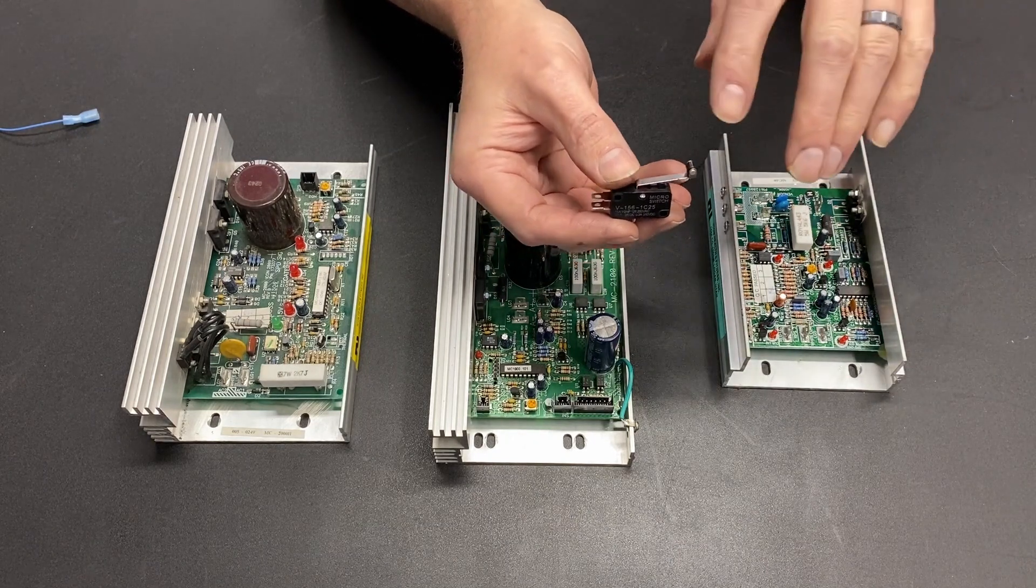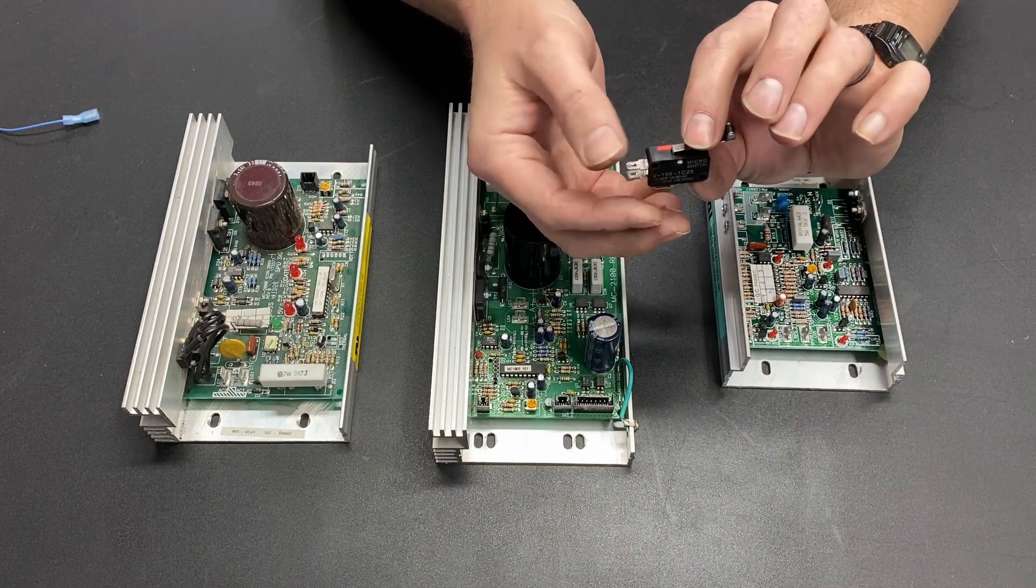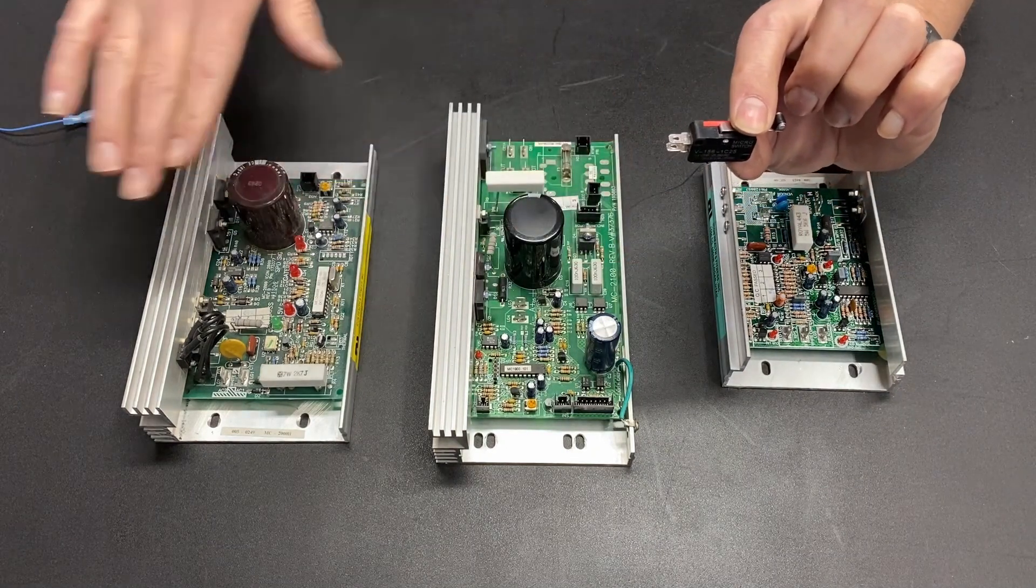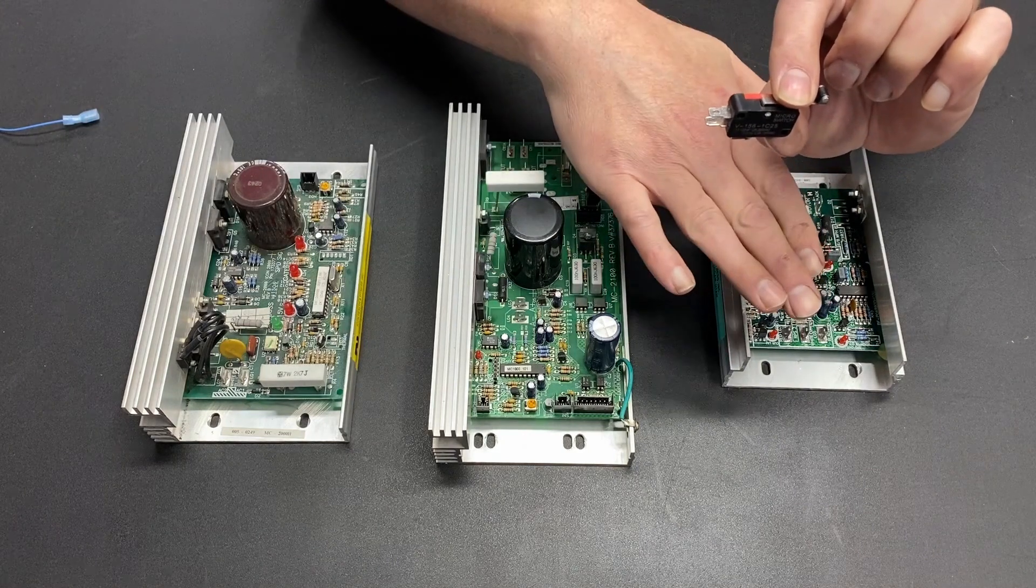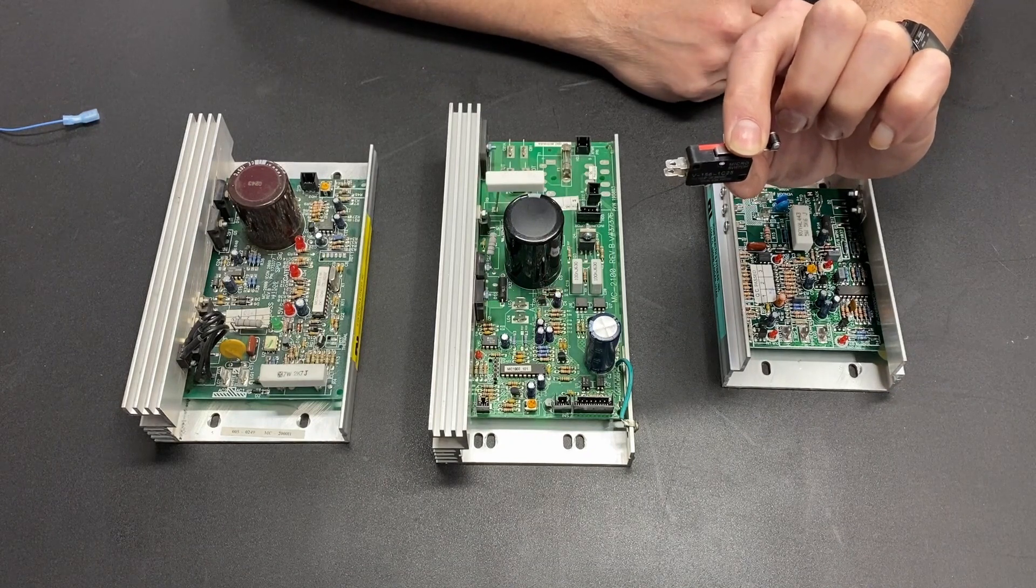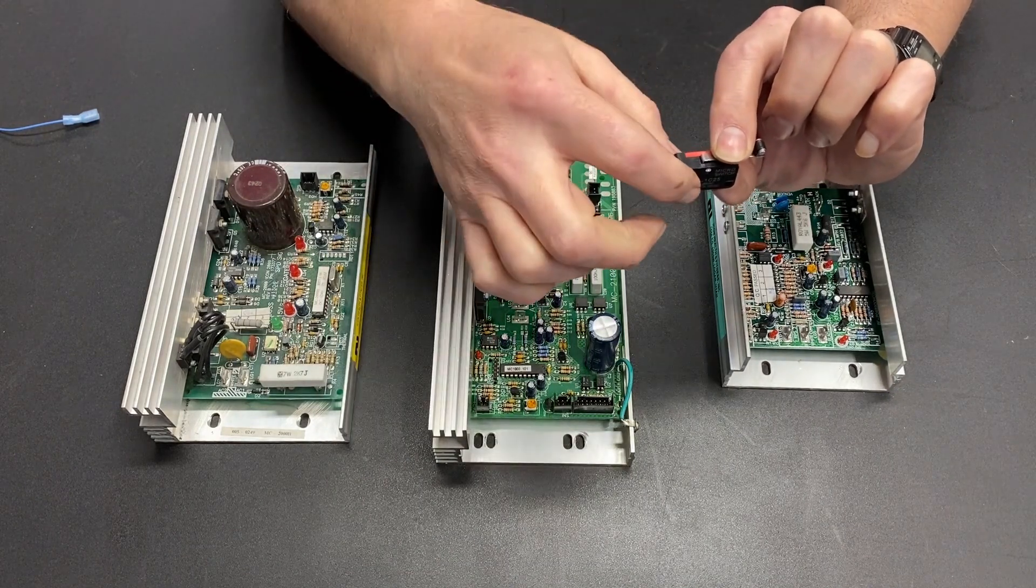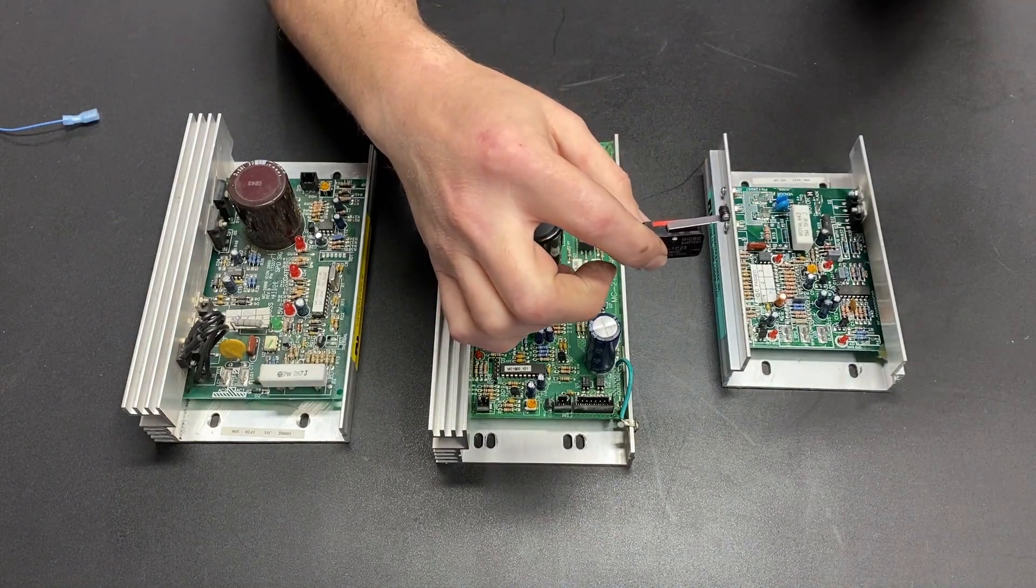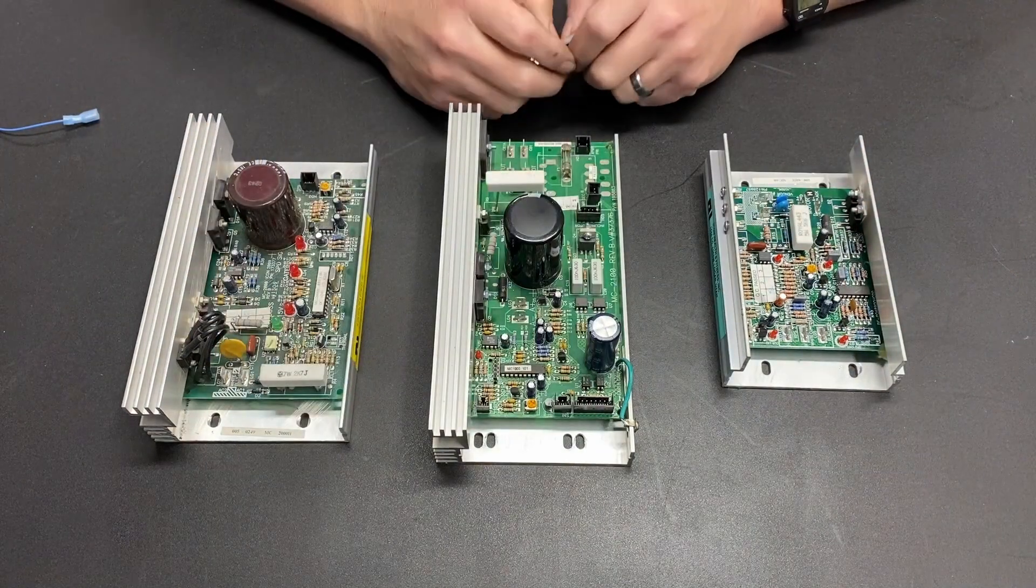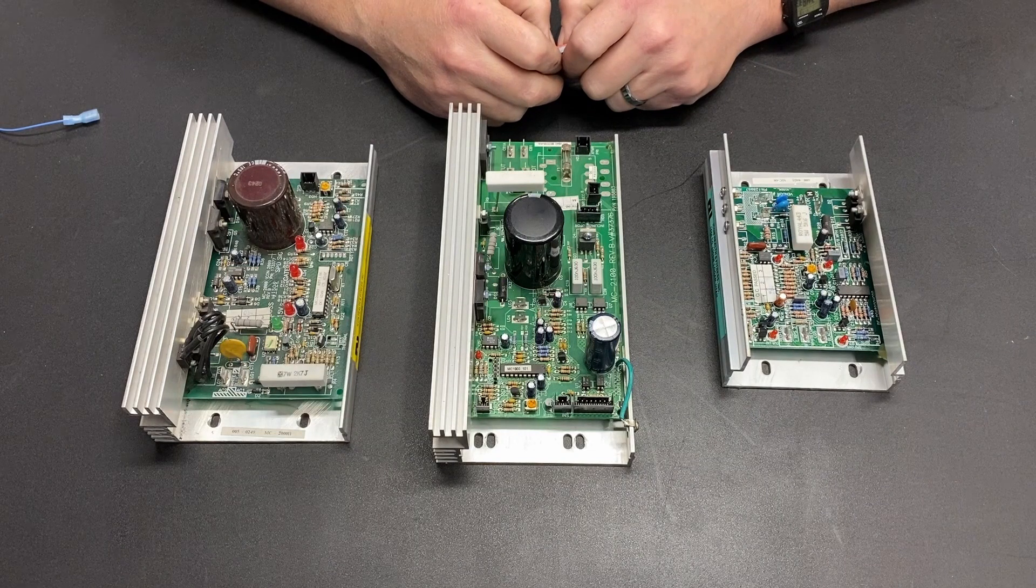When you're ready to use the machine, you simply press the momentary switch, disconnecting, depending on which one you're doing, either the H here, the H here, or the signal here. You flip the power switch. You give it a couple seconds. And then you let off the momentary switch. And that will complete the circuit. And it will come up to speed with no soft start.